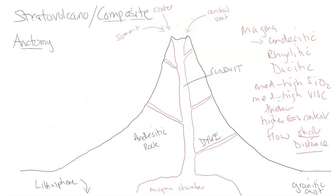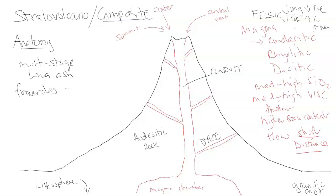Going back to the magma: this magma is felsic, so it's generally low in magnesium, iron, and calcium, but compensates by being higher in potassium and sodium. This makes it a thicker, higher gas content magma with the potential to create more explosive eruptions. These are multi-stage eruptions with lava and ash. Fumaroles produce gas as a way out, but gas is also trapped in the magma, leading to a longer period between eruptions — this is called the repose.